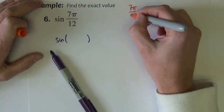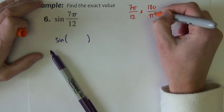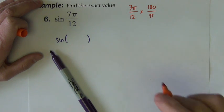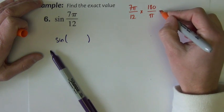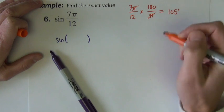7 pi over 12, if I multiply this by 180 over pi. So I have 7 times 180 divided by 12. This comes out to be 105 degrees.